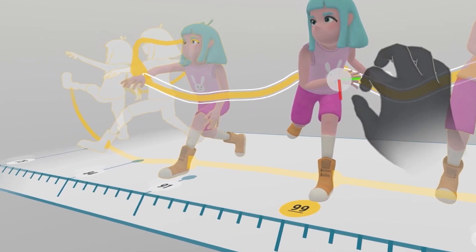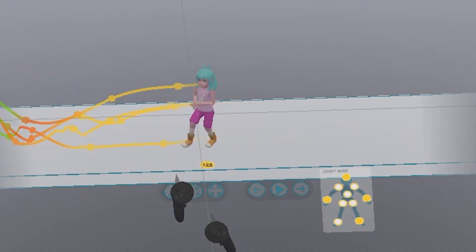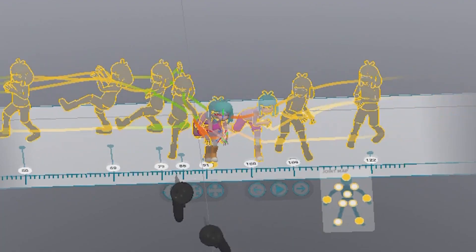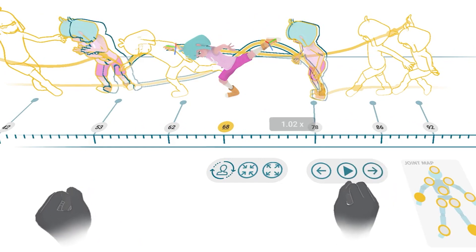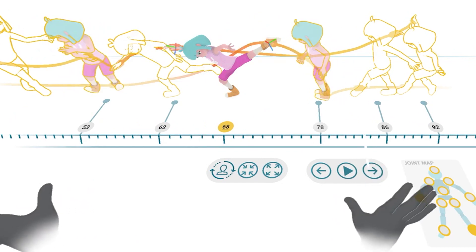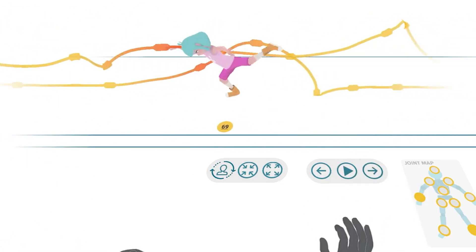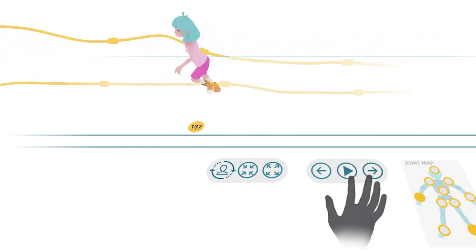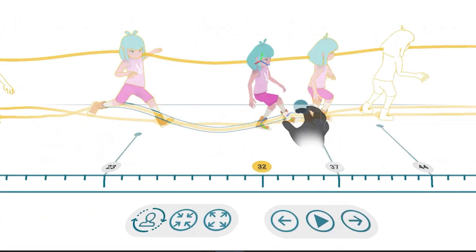Overall, Time Tunnel provides an approachable way to edit character animation by integrating space and time and leveraging visual cues that support direct manipulation. This approach complements existing tools and supports a variety of animation contexts, including motion capture data, thereby enabling new animation workflows.